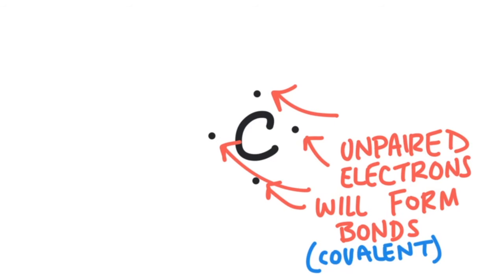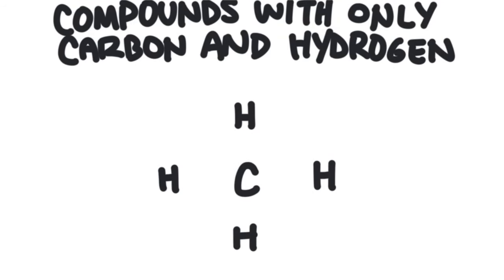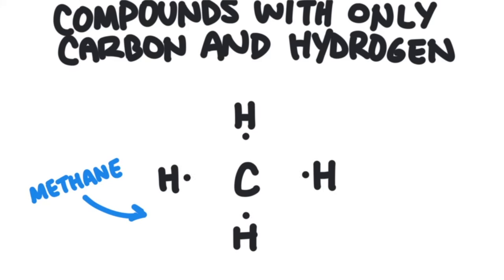Compounds that contain only carbon and hydrogen are called hydrocarbons, and hydrocarbons make up the backbone of most organic molecules. The simplest hydrocarbon has one carbon and four hydrogens — it's called methane. Methane is formed when four hydrogen atoms surround a carbon atom and covalently bond. Each hydrogen only needs two valence electrons; it starts with one of its own and gets the other from carbon. Carbon needs eight electrons; it starts with four and gets four more from the hydrogens, one from each of them.